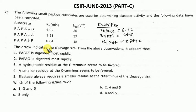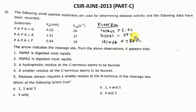The arrows indicate the cleavage site. From the above observation, the first option — PPAF is digested more rapidly — is correct. Why? Because its catalytic efficiency is the highest at 28.12. That means the first option is correct. You need to match the other options, but if one option is clearly correct and others are inconsistent, you can identify the answer efficiently.